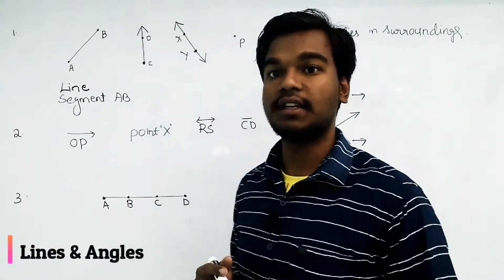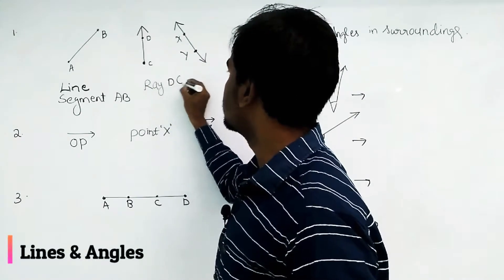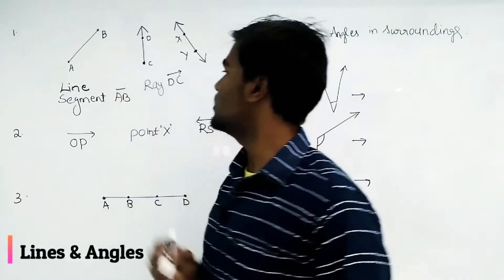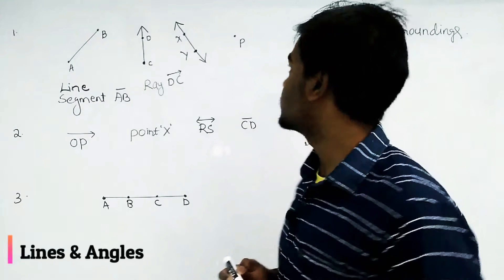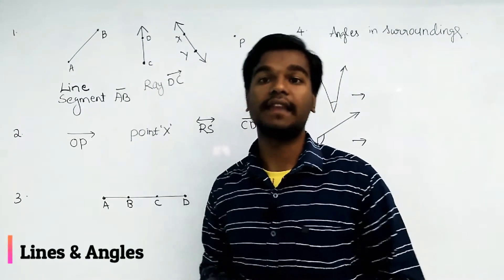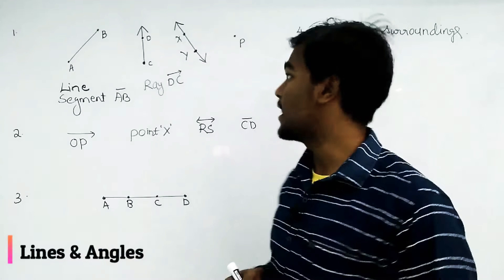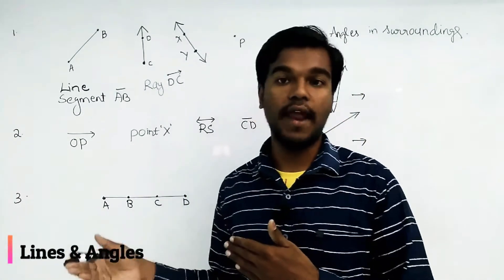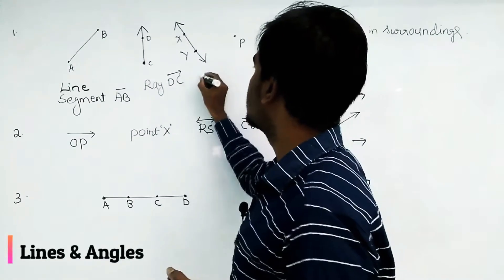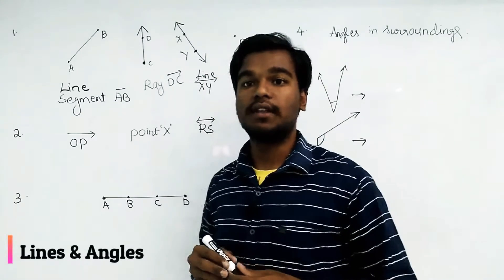A ray has a starting point but no ending point — that type of thing is called a ray. This one is ray DC. A line segment is written as AB with a bar. A line has no starting point and no ending point; it goes in two directions with arrow marks on both ends. We can call this one line XY.